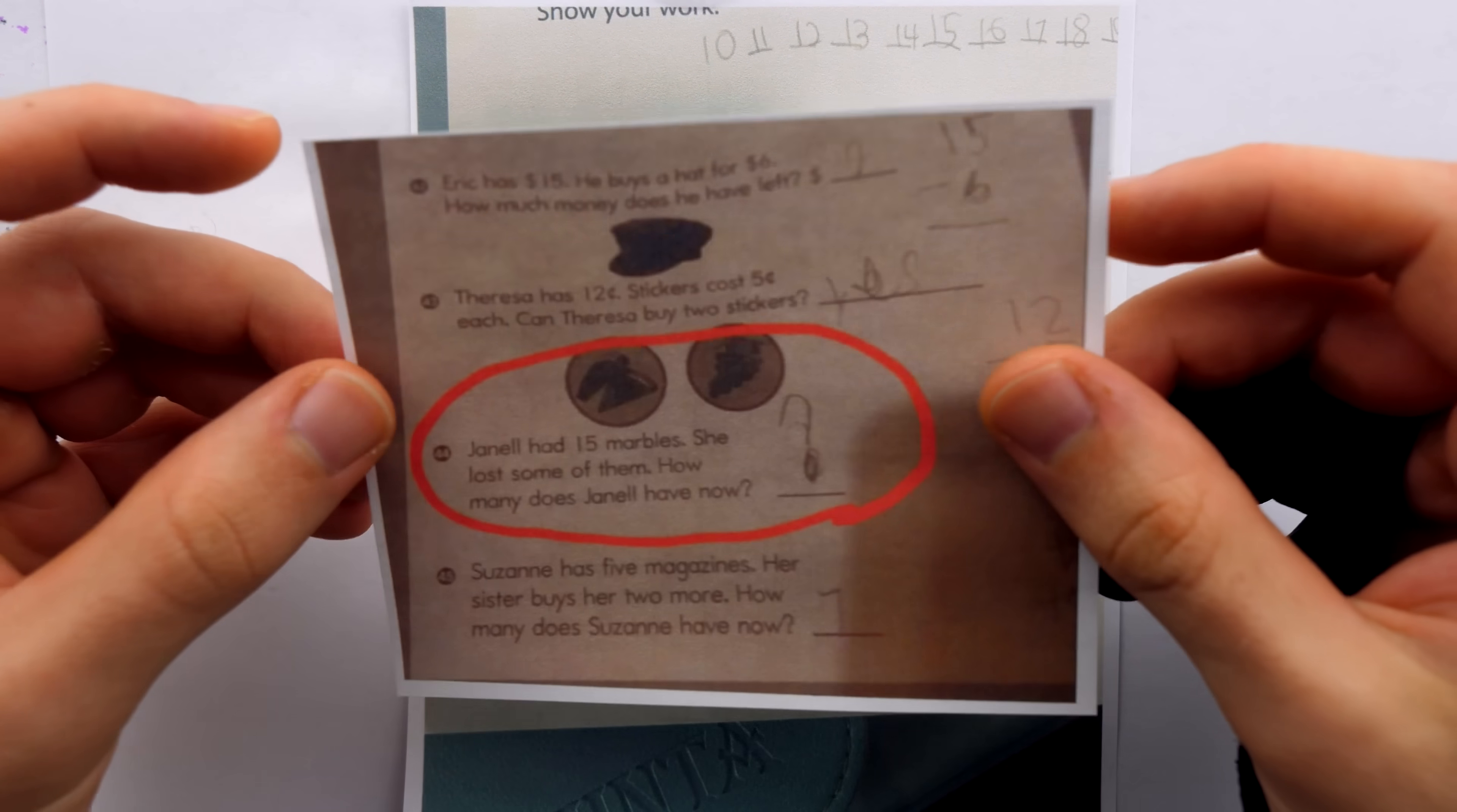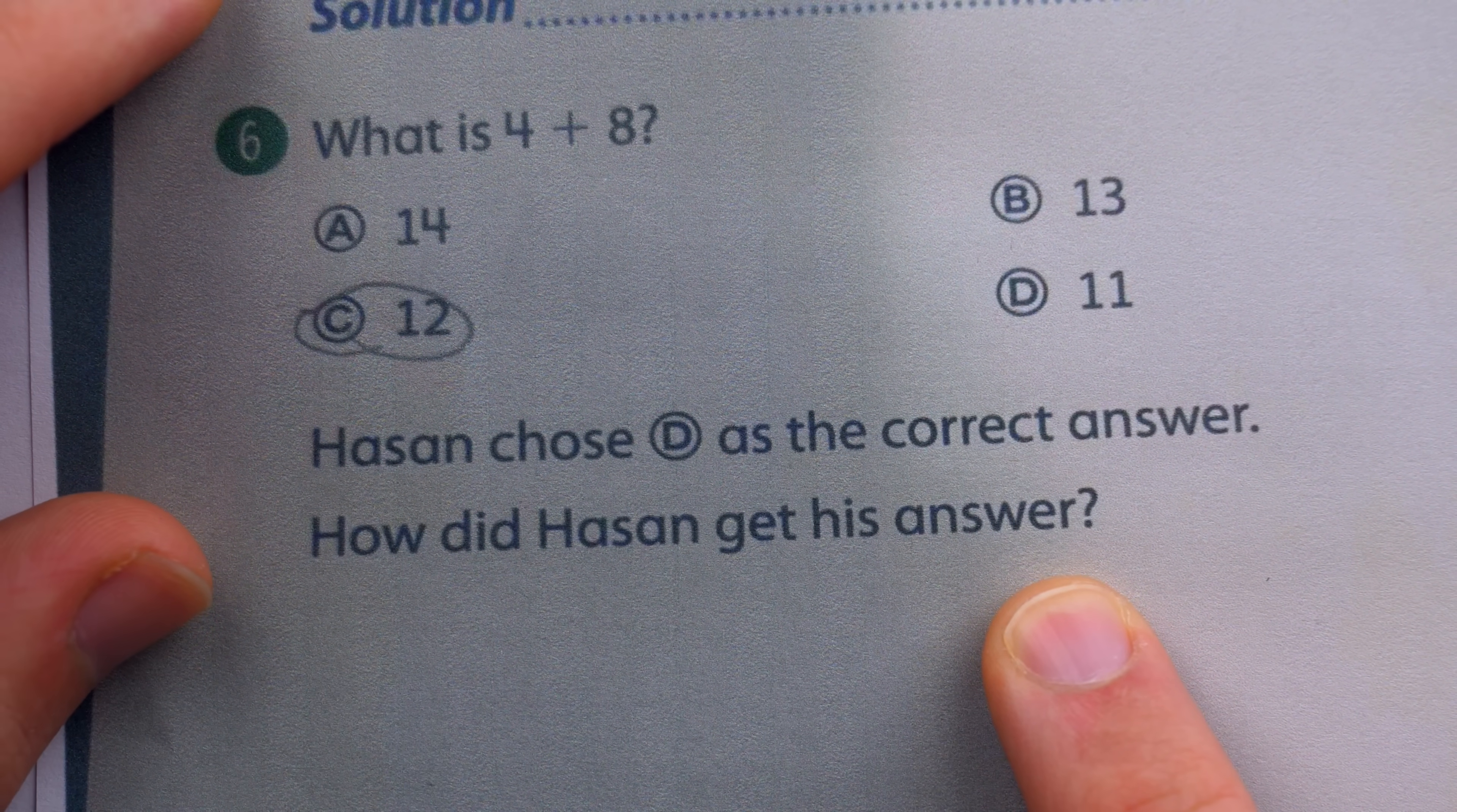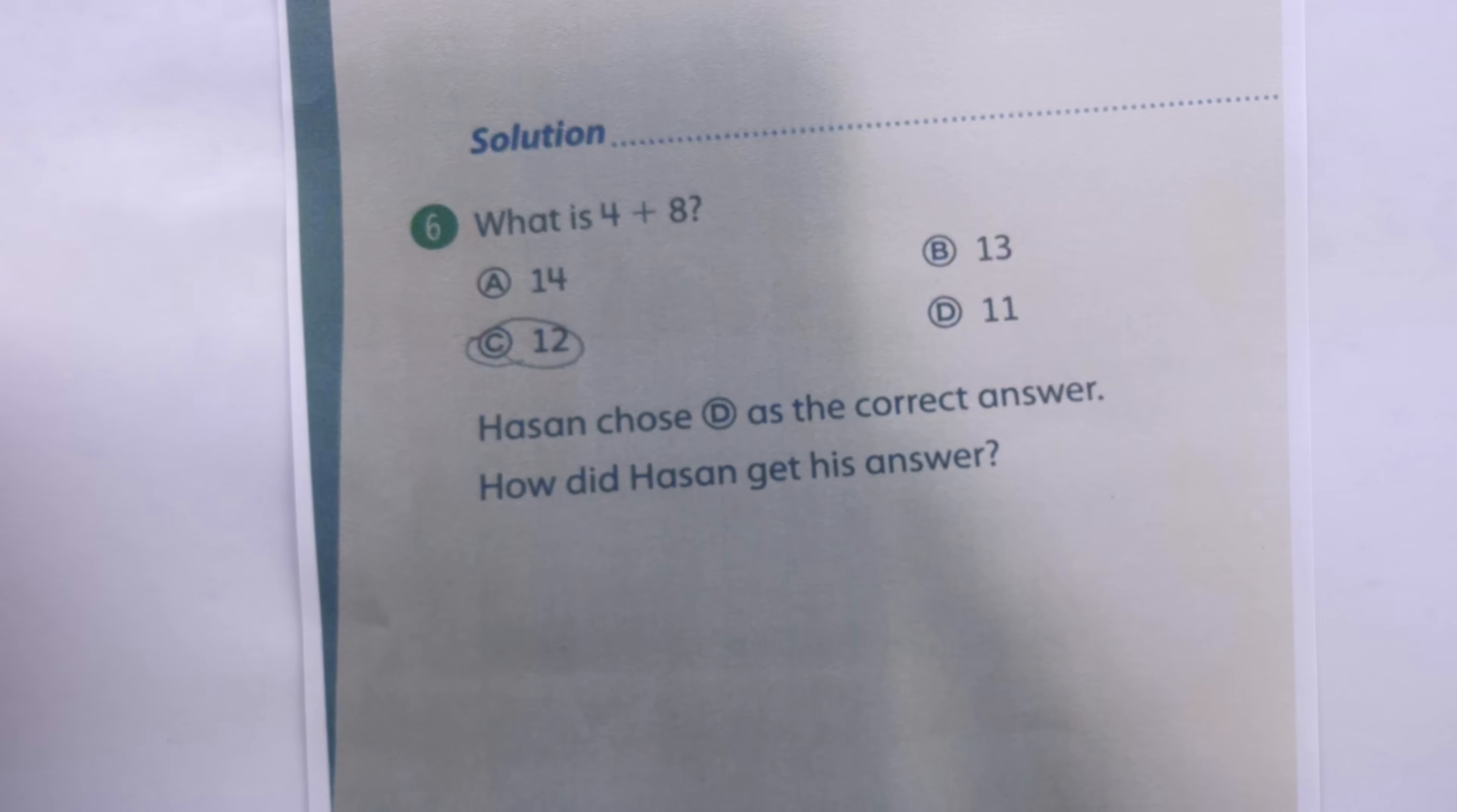This is perfect meme material in the family of weird school math problems. They start off normally, nice and easy question, and then they give you a twist you'd never expect. Here's an easy question you could get right. Now how did this dude get it wrong? I know 4 plus 8 is 12. How am I supposed to know why Hassan thinks it's 11?